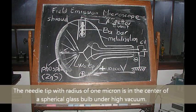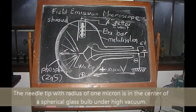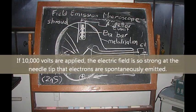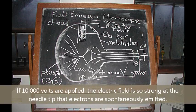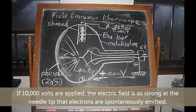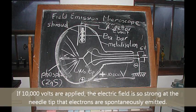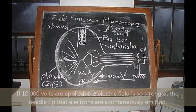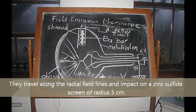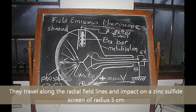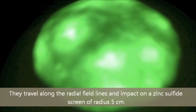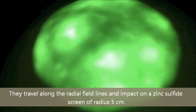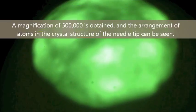The needle tip is in the center of a spherical glass bulb under high vacuum. With 10,000 volts applied, the electric field is so strong at the needle tip that electrons are spontaneously emitted. They travel along the radial field lines and impact on a zinc sulfide screen of radius 5 cm. A magnification of 500,000 times is obtained.